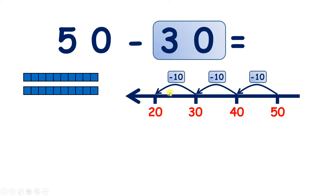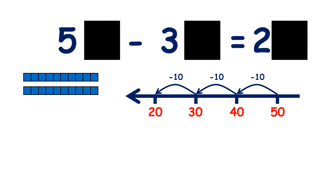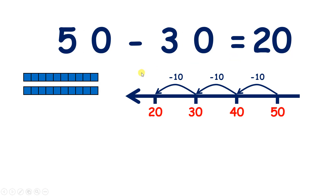So we've subtracted ten three times, or we've subtracted three lots of ten, which is 30. So 50 take away 30 is 20. And if we were subtracting units, we would know that 5 minus 3 is 2. So with tens: 50 is five tens, 30 is three tens, so that leaves us with two tens, which is 20.